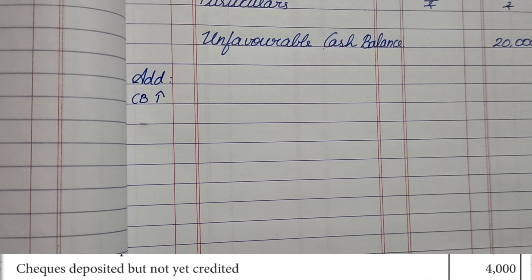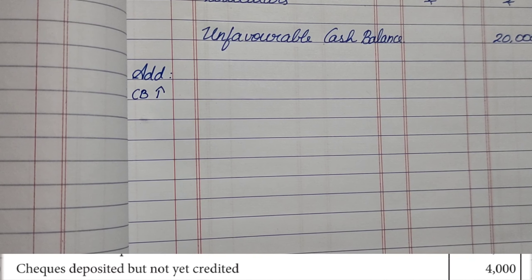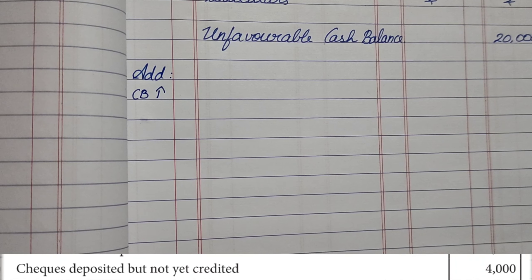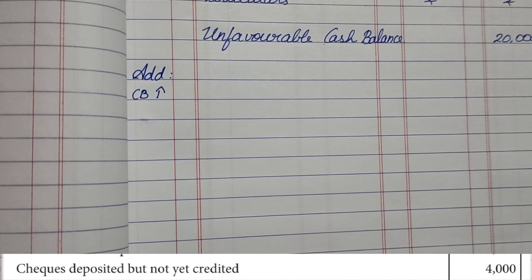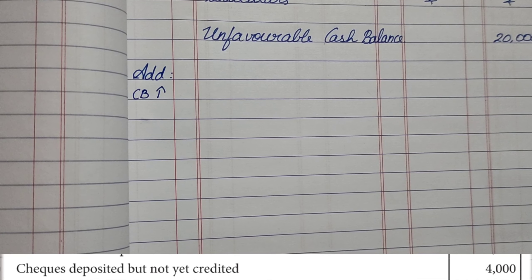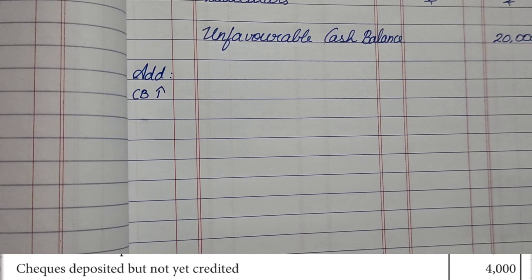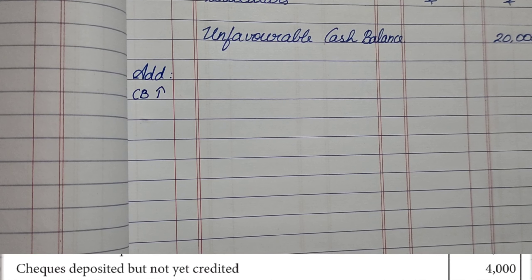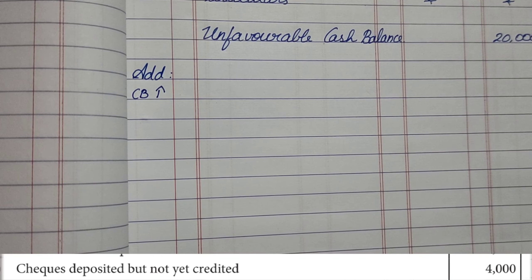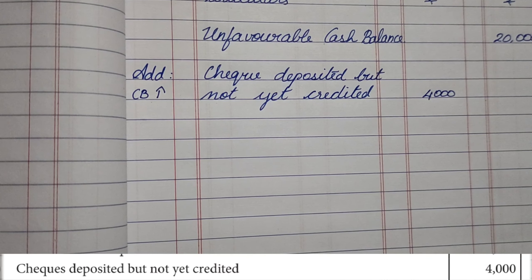The first transaction is checks deposited but not yet credited. When a check is deposited, the cashier immediately records it on the receipt side of the cash book in the bank column, so the cash book balance increases. However, 'not yet credited' means the bank has not yet deposited it — since credit means deposit in the bank's double-entry system. So the bank is decreasing and cash is increasing, meaning we put this 4,000 in the Add category.